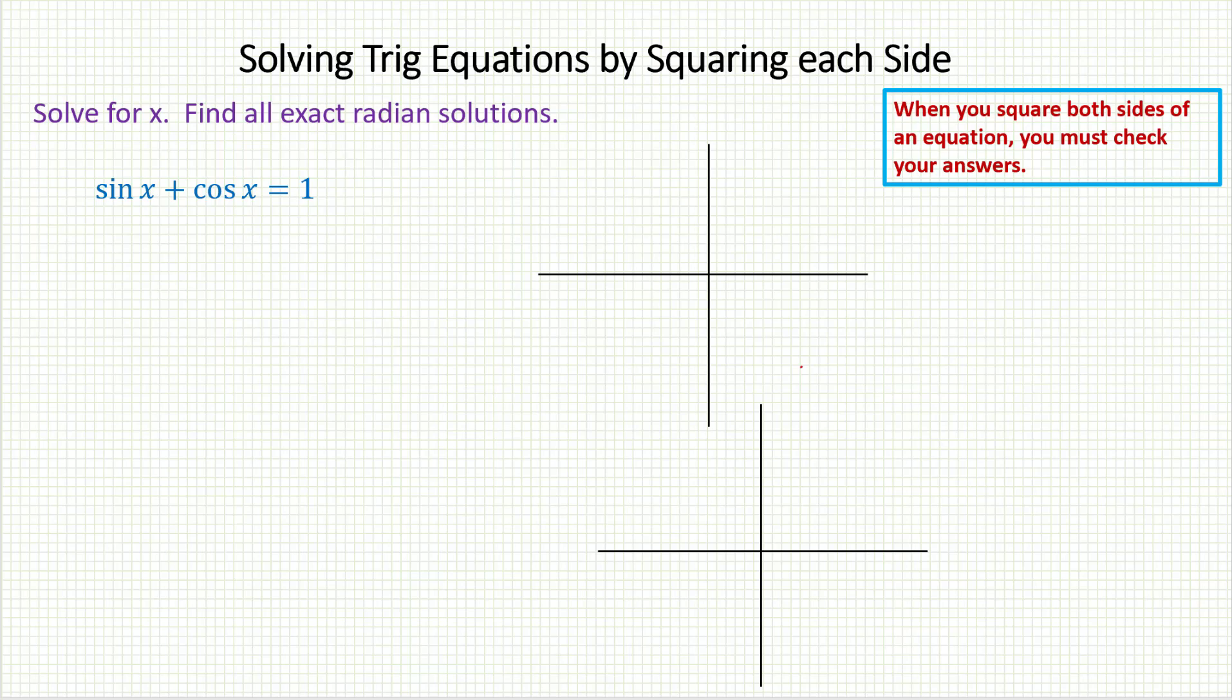Solving trig equations by squaring each side. We want to solve for x, find all exact radian solutions. Take a look at the equation. It's pretty simple looking, but the main problem is I have a sine and I have a cosine. When you've got two different trig functions like that, the problem tends to be a little more complicated.